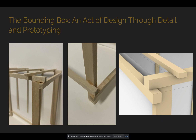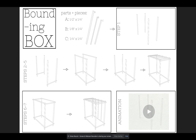Next was creating the bounding box. Here we studied different types of corners and joints that we could use to create the box itself. I also created a kind of instructional guide that shows a step-by-step on how to create the box that I designed. This was interesting because I had to step back and think about what order I could use to make everything as easy as possible to put together.